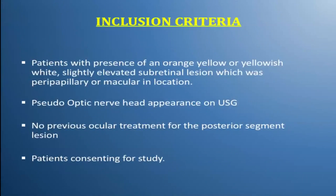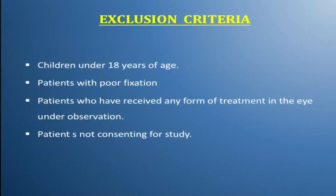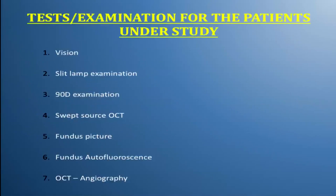We included patients with presence of an orange, yellow, or yellowish-white, slightly elevated subretinal lesion which was peripapillary or macular, with pseudo-optic nerve head appearance on ultrasound. All these eyes were treatment-naive. We excluded patients under 18 years of age with poor fixation, and also patients who were not treatment-naive.